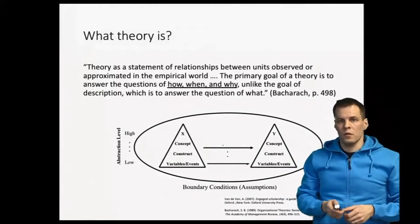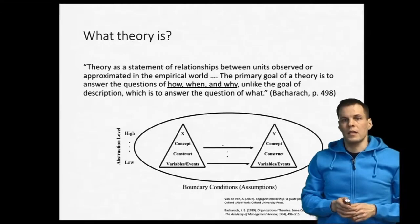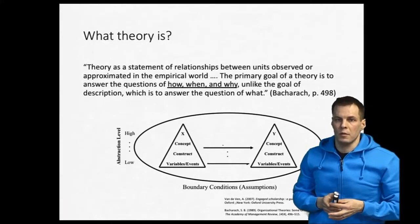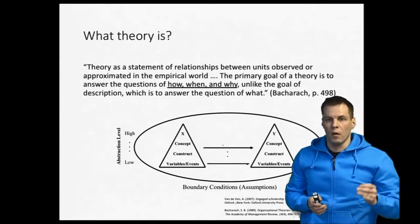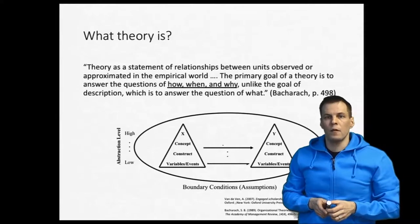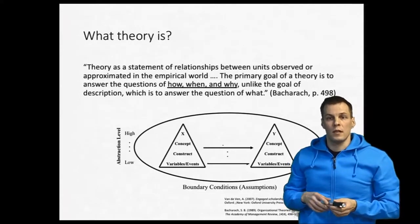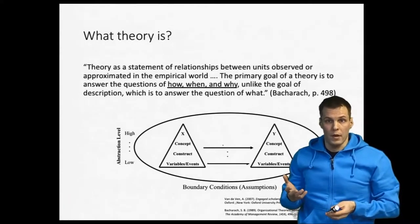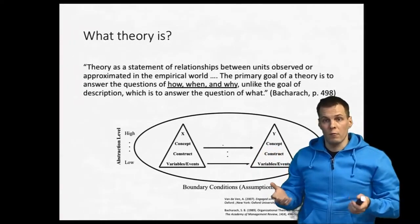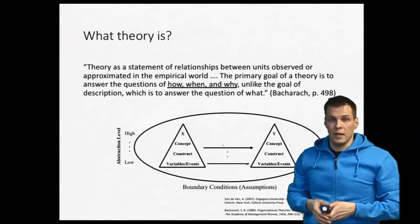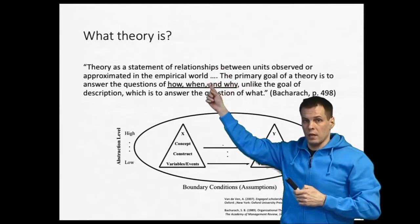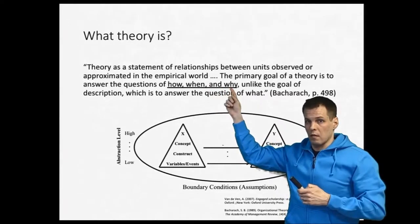Theory, first of all, is an explanation. Theory is a statement about relationships — how, when, and why those relationships occur — and it's different from description, which just explains what happens without the why question. Typically when we write research papers, it's easy to say what happens and how, but doing the justification — the why part of the theory — that's the hard part.